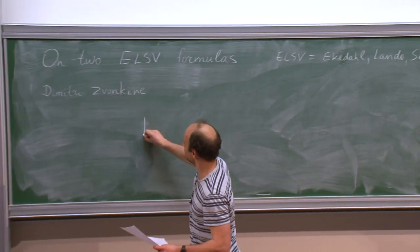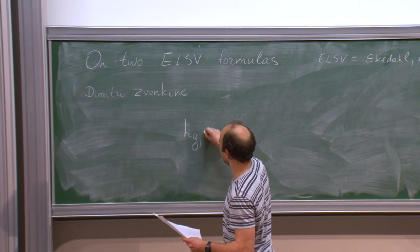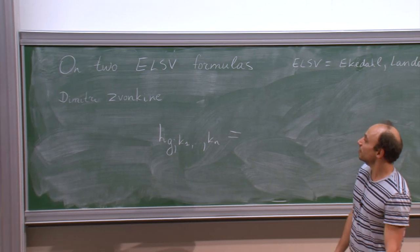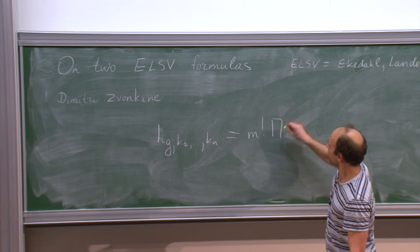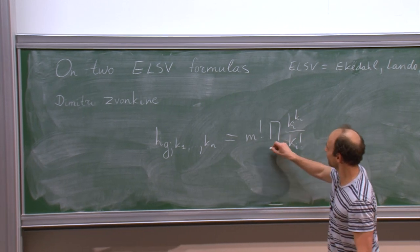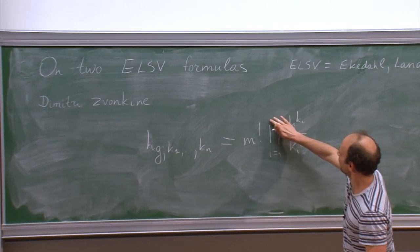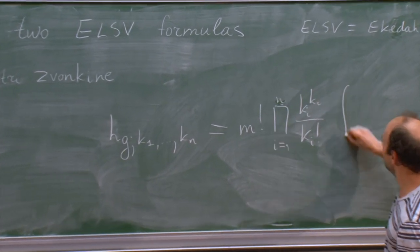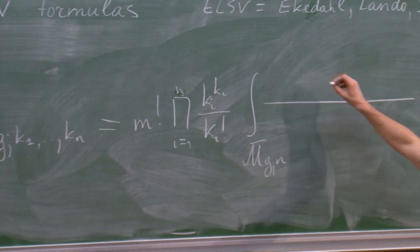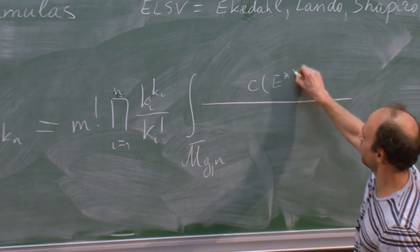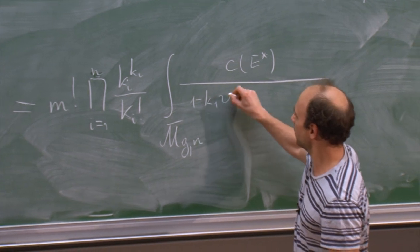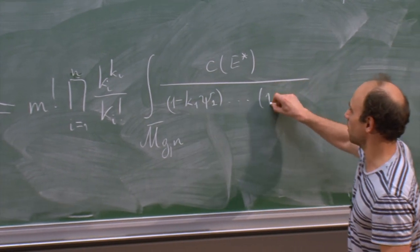It's an equality between Hurwitz numbers, which I will explain in a moment, on the left-hand side. On the right-hand side you have a combinatorial coefficient, and the main part is an integral on the moduli space of stable curves. Here you have the total Chern class of the dual of the Hodge bundle, and here you have some expression with psi classes.